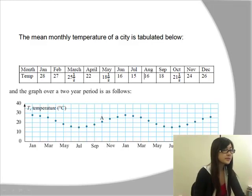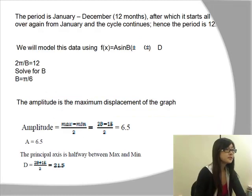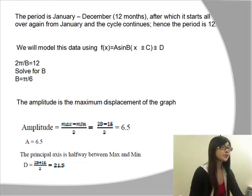This graph shows a period of two years, so you can see that this pattern repeats itself over time. The period is January to December of 12 months, after which it starts again from January, and the cycle continues. Therefore, the period is 12 months.